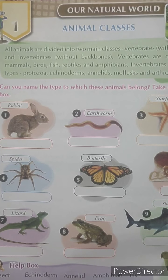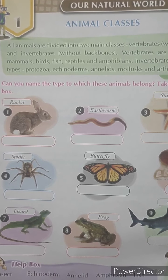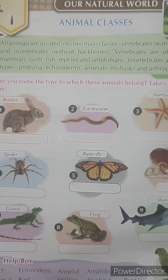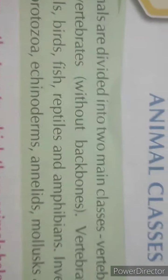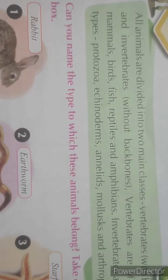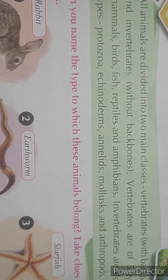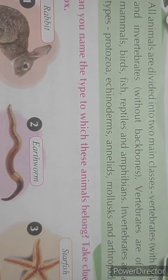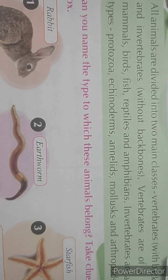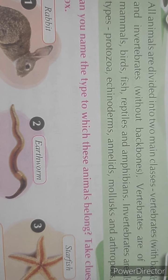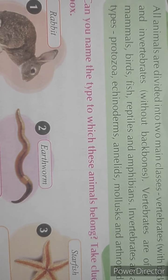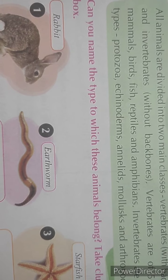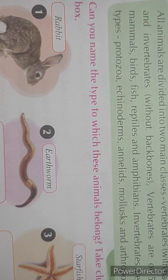Lesson number 1: animal classes. All animals are divided into two main classes. What are the two main classes? Vertebrates and invertebrates. Vertebrates are those animals which have a backbone, and invertebrates are those animals which are without backbones.